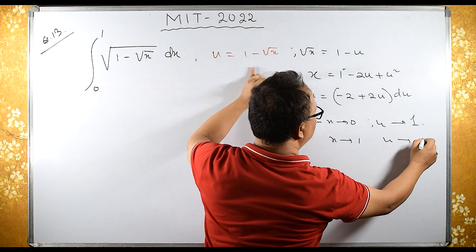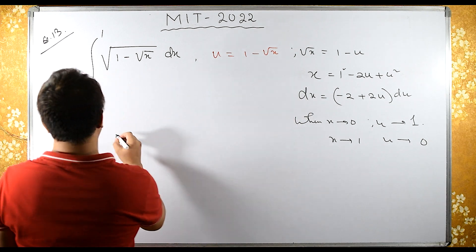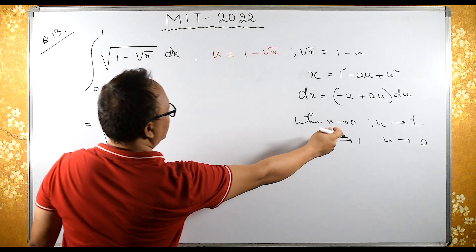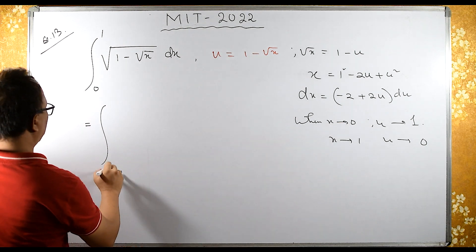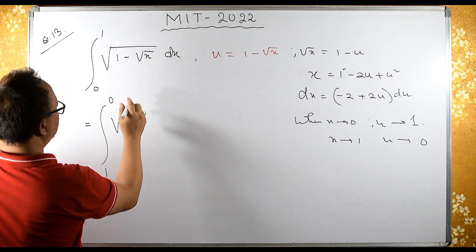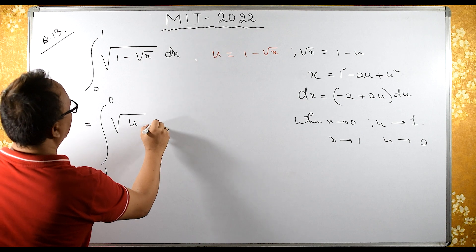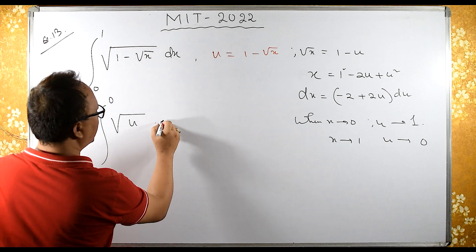So the integral is from 1 to 0, which becomes 0 to 1 reversed. The integrand is square root of u times dx, which is (-2 + 2u) du.